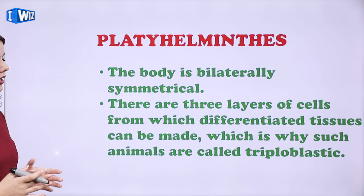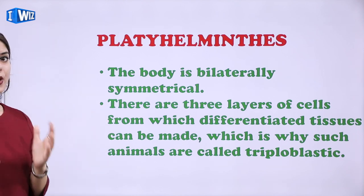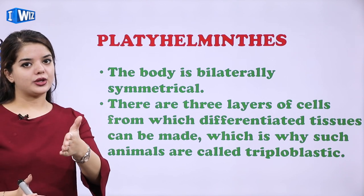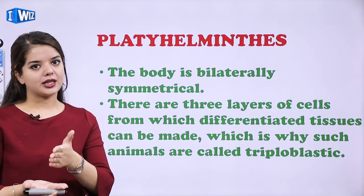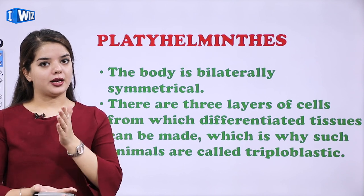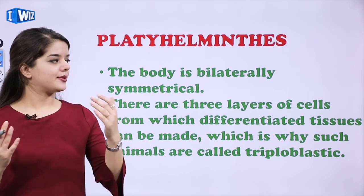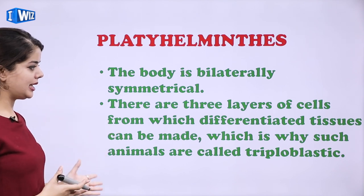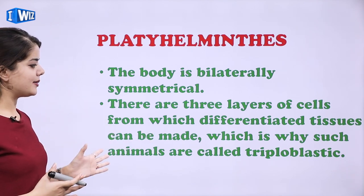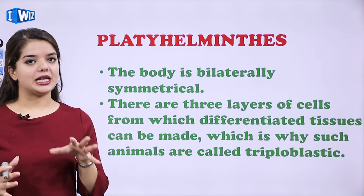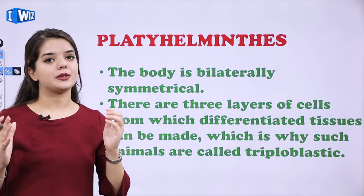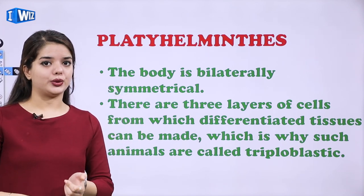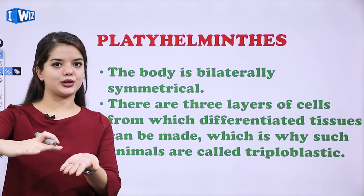Then we have Platyhelminthes. The body is bilaterally symmetrical — bilaterally symmetrical ka matlab ki jab kisi ko divide karengi, do equal halves milenge. There are three layers of cells from which differentiated tissues can be made, which is why such animals are called triploblastic — teen layers of cells jo differentiated tissues banaate hai usse hum triploblastic kehte hai.